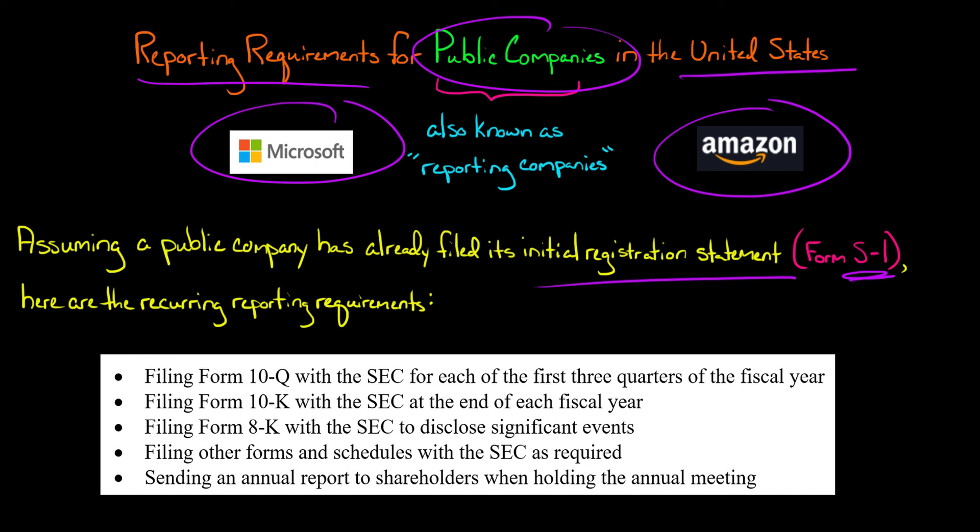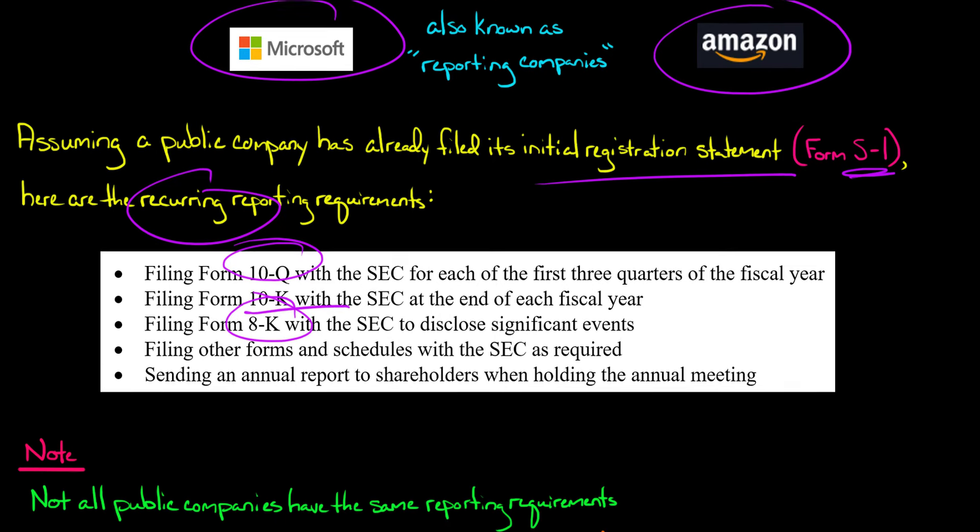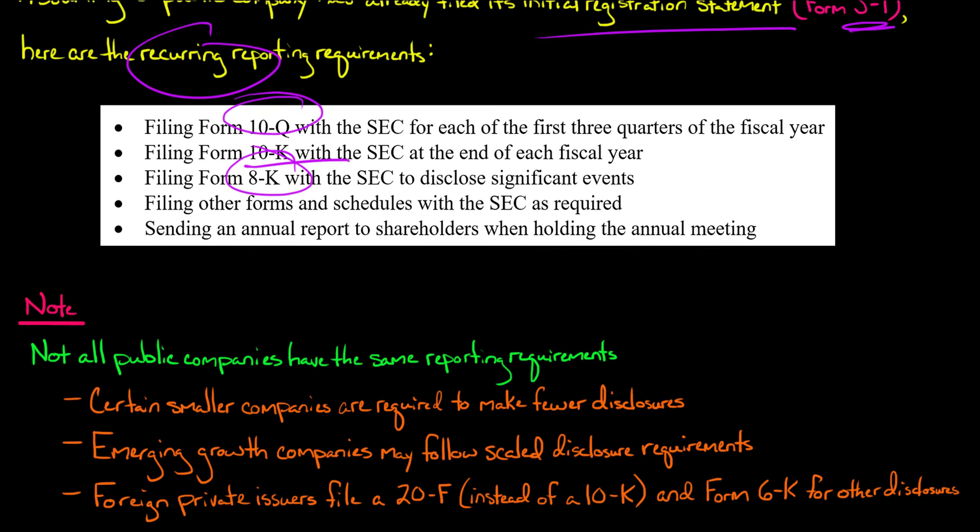Such as filing a 10-Q every quarter, filing a 10-K every year, filing an 8-K when there's a material event that occurs, and so forth. I want to go through some of these reporting requirements in a little more detail.